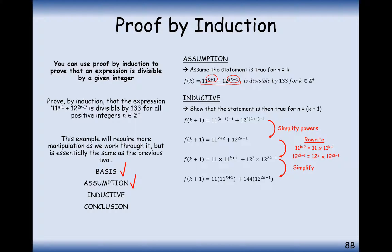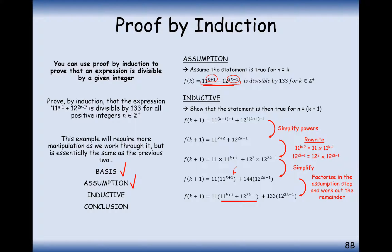Now I want the entire assumption expression to occur inside one bracket, so I squeeze 12 to the power of 2k minus 1 into the bracket alongside 11 to the power of k+1. There's an 11 at the front, so when I expand I'd get 11 lots of 12 to the power of 2k minus 1. But I actually want 144 of those — so I need an extra 133. That's where the divisibility by 133 comes back in: the extra 133 lots of 12 to the power of 2k minus 1.